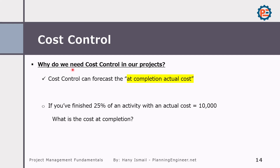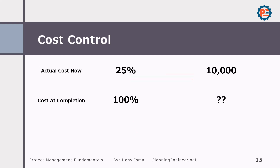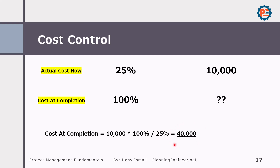Cost control can also forecast the cost at completion. For example, if we finish 25% of an activity with an actual cost of 10,000, what could be the cost at completion? Using a simple cross-multiplication formula: cost at completion = 10,000 × 100 ÷ 25. This tells the project manager or company owner that if we continue at this performance, the project will cost this amount — and accordingly we know if we are making a good profit or losses.